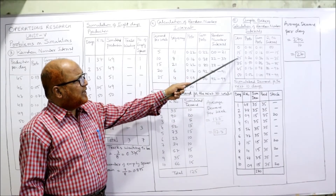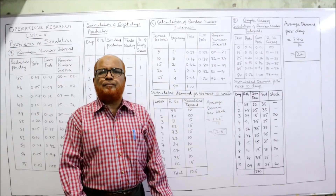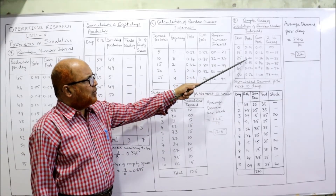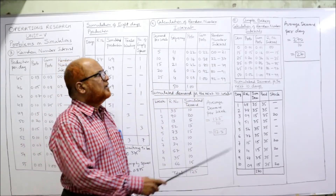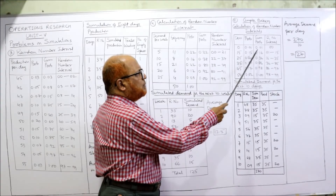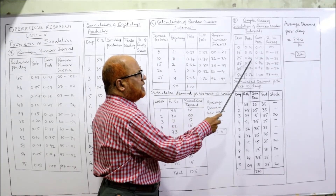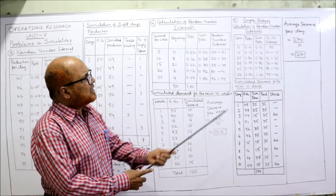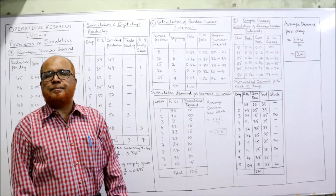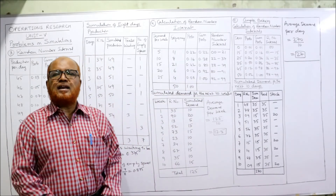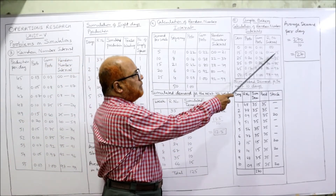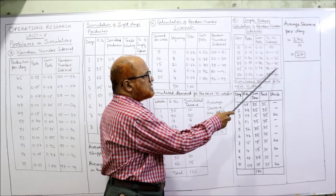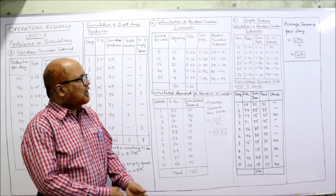Daily demand is 0, 15, 25, 35, 45, 50. Cumulative probabilities: 0.01, then 0.01+0.15=0.16, then 0.16+0.20=0.36, then 0.36+0.50=0.86, then 0.86+0.12=0.98, then 0.98+0.02=1.00. Random number intervals: 00 only, then 01 to 15, then 16 to 35, then 36 to 85, then 86 to 97, then 98 to 99. This is the complete random number interval for problem five.